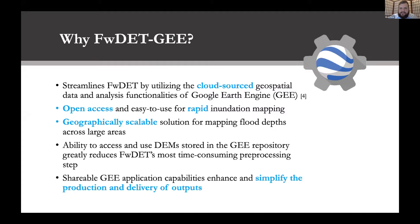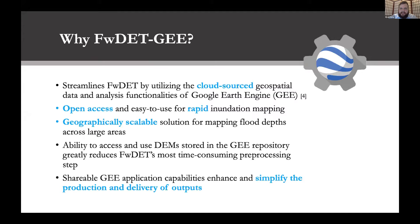Why Earth Engine? One reason is to streamline the process by utilizing the cloud-sourced geospatial data and analysis functionalities of Google Earth Engine. It's an open-access, easy-to-use tool for rapid inundation mapping. It's also a geographically scalable solution for mapping flood depths across large areas. One key advantage we found is that accessing DEMs stored in the Earth Engine repository greatly reduced the most time-consuming pre-processing steps from earlier versions of FwDET. Earth Engine also makes it simple to deliver and share results more readily.